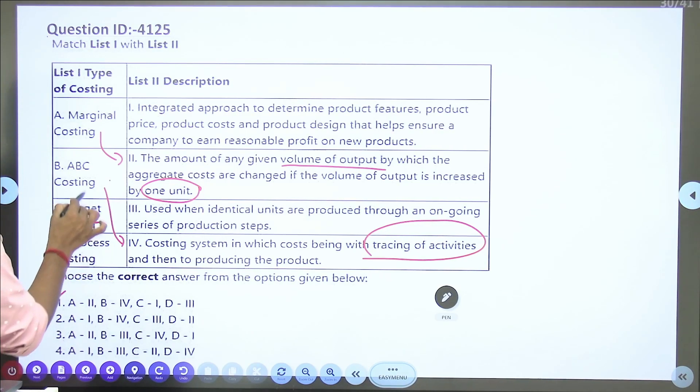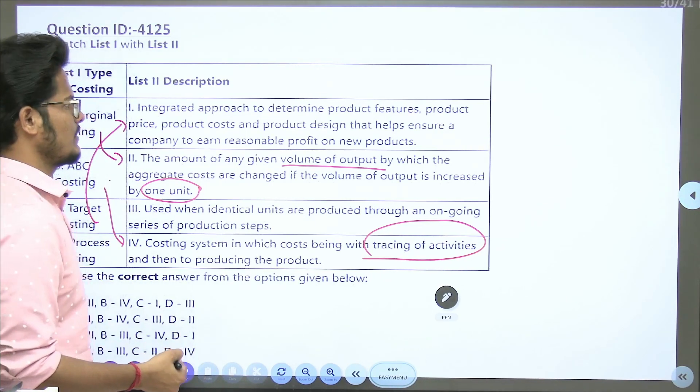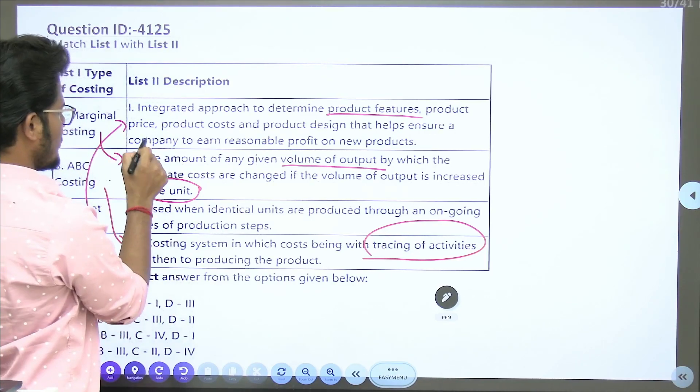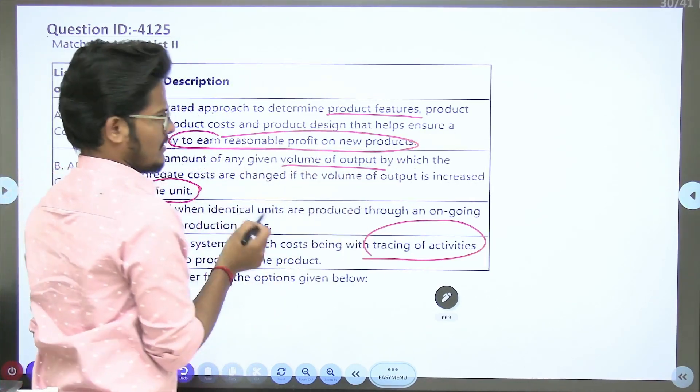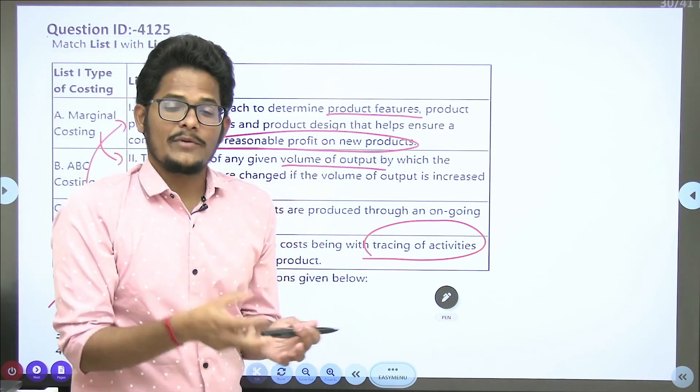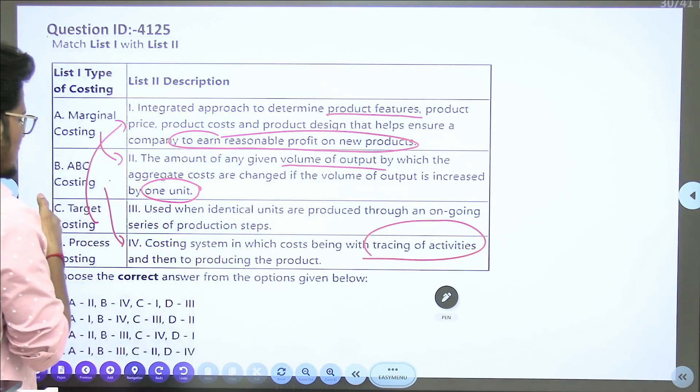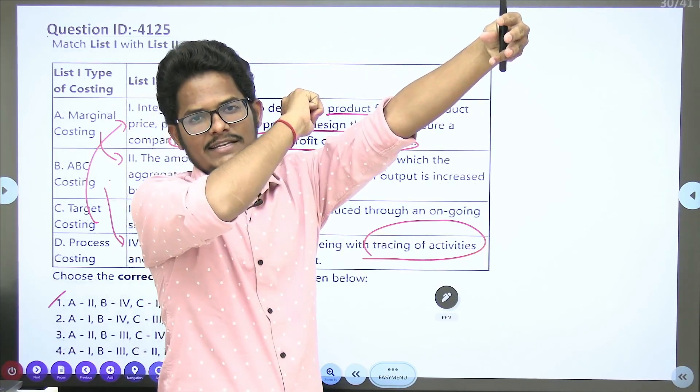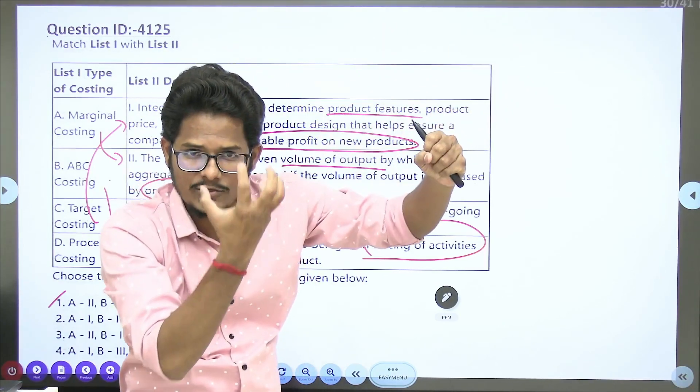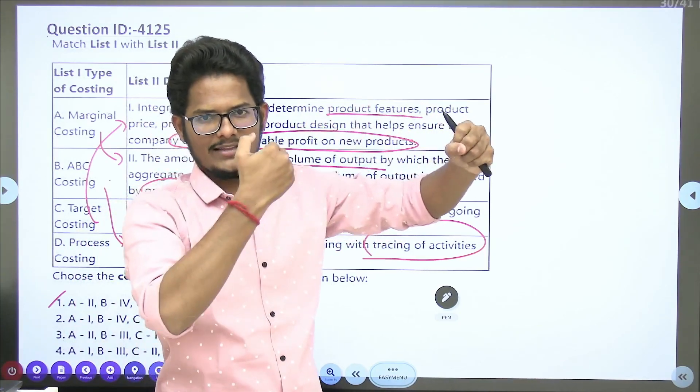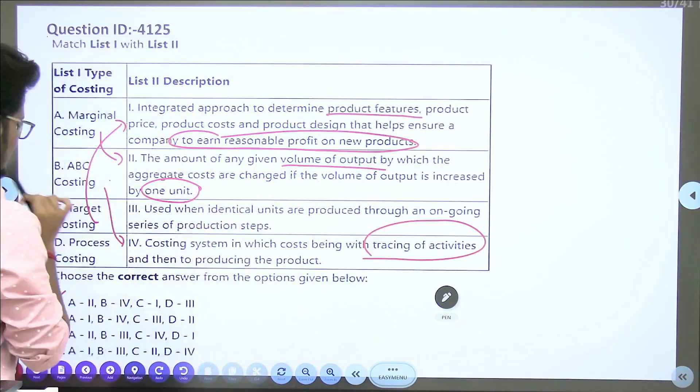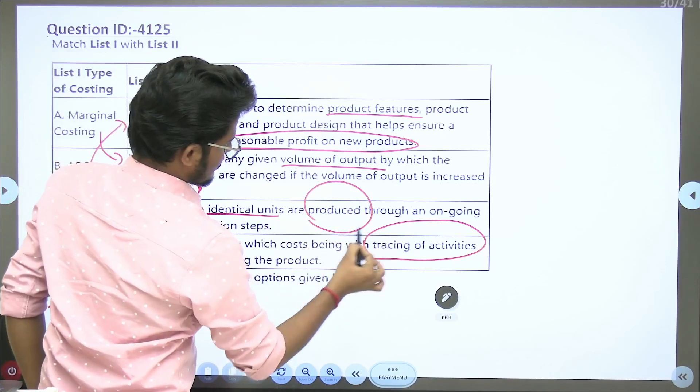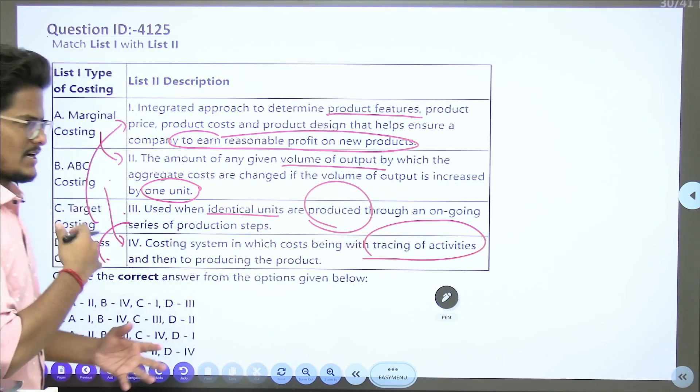Target costing is what we just saw with price lining. It's an integrated approach to determine product features, price, and product cost to ensure company earns reasonable profit. Process costing is used in identical products that are produced through ongoing series of production, continuously the production has to happen.